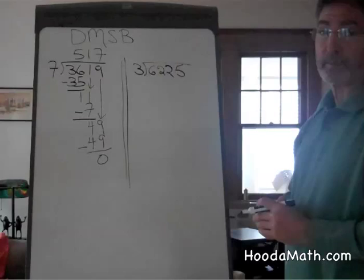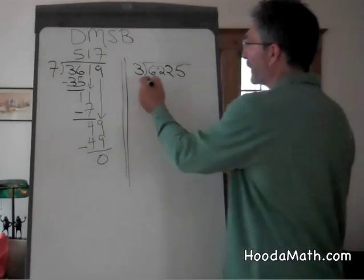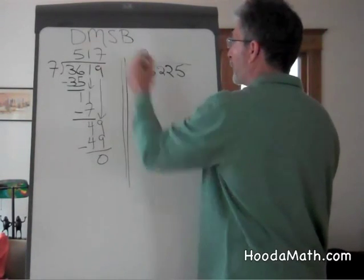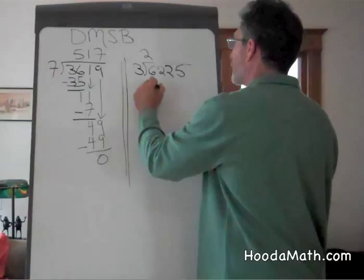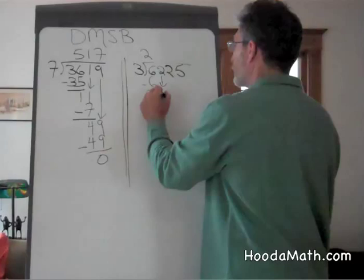The next problem is slightly more complicated. 3 is a factor of 6. 3 goes into 6, 2 times. Now we multiply. 2 times 3 is 6. Subtract. The remainder is 0. We bring down 2.